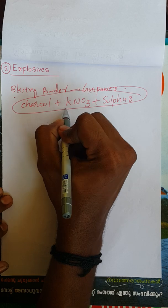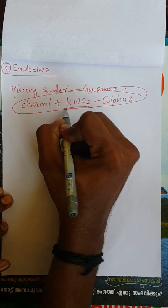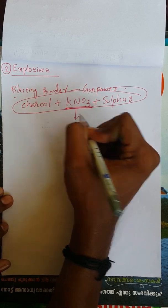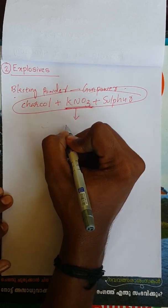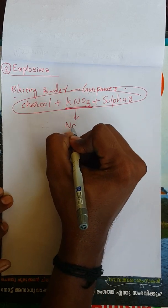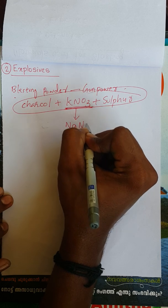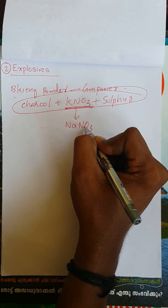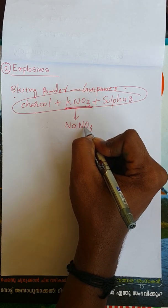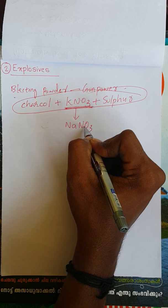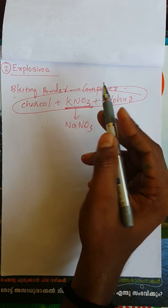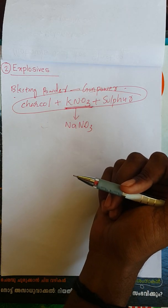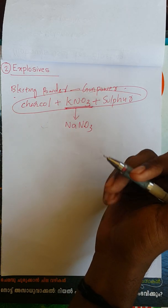In this case, saltpeter has another name — it is called chili saltpeter. These are our gunpowder conditions.